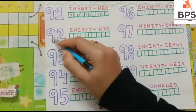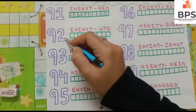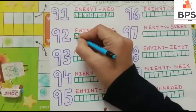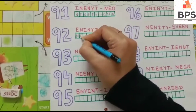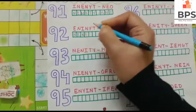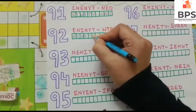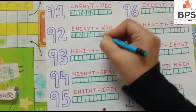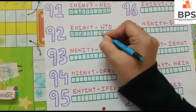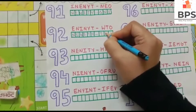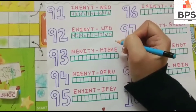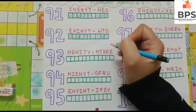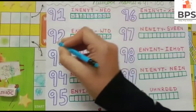9, 2, 92 — N-I-N-E-T-Y, 90, T-W-O, 2, so 92.